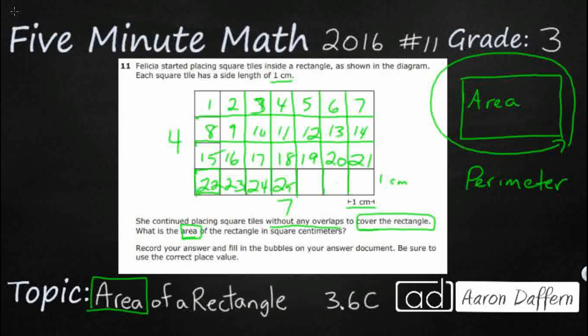The area of this rectangle is going to be—it says right here—in square centimeters. There are different ways to write this. A is typically how we abbreviate area, so A equals 28.